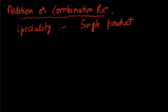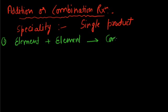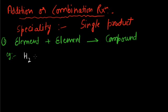We can classify combination reactions into three categories. The first is when element plus element forms a compound. That is the first criterion: when an element combines with another element and forms a compound, the reaction is known as an addition reaction. The condition is that the product will be a single type of compound.